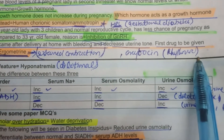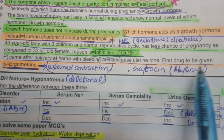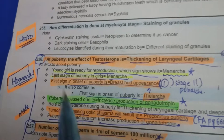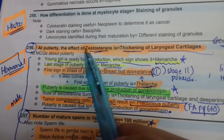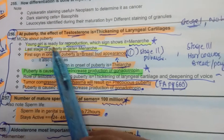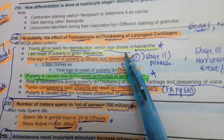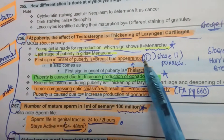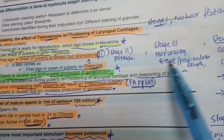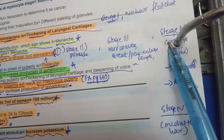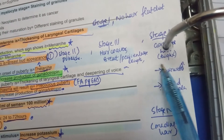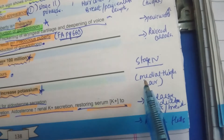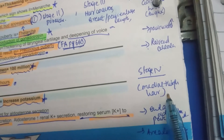Point 256: At puberty, the effect of testosterone is thickening of the laryngeal cartilages and deepening of voice. A young girl ready for reproduction — the sign is menarche, which is the last stage of puberty in girls. The first sign is breast bud appearance (thelarche). Tanner stages reviewed: stage one — breast bud; stage two — pubic hair; stage three — hair coarsens, breast and penis enlarge; stage four — areola thickening.